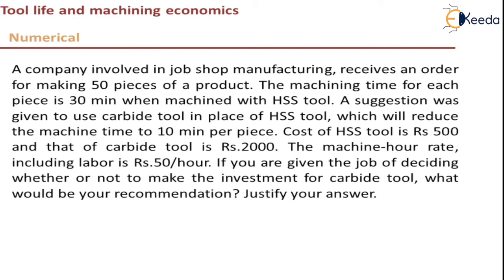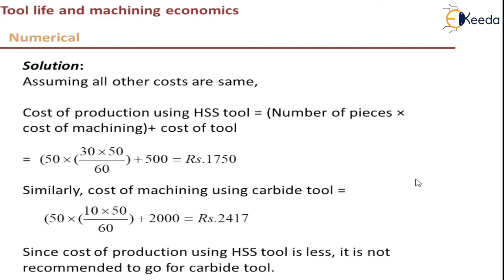Since all other costs are the same, the cost of production using HSS = number of pieces × (machining time × machine rate / 60) + tool cost = 50 × (30 × 50 / 60) + 500 = 1,750 rupees. For the carbide tool: 50 × (20 × 50 / 60) + 2,000 = 2,417 rupees. The HSS tool costs less, so it should be preferred over the carbide tool.